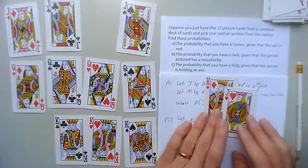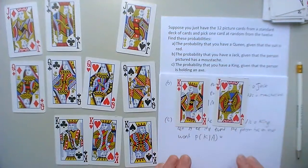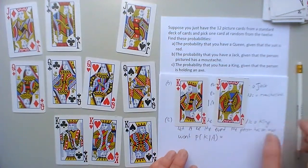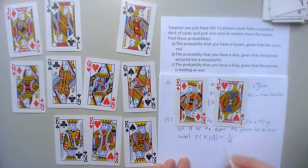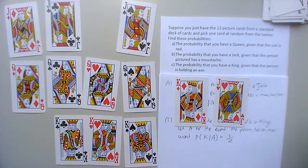And that's not an axe either. I reckon it's like a club with a spike in it. Okay, so we ended up with two axes, and one out of the two is a king. So one king out of two people holding axes, so the probability is a half.